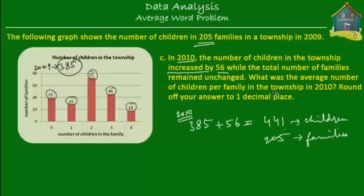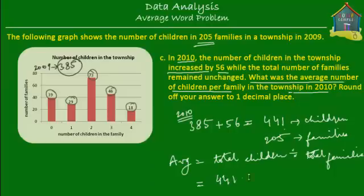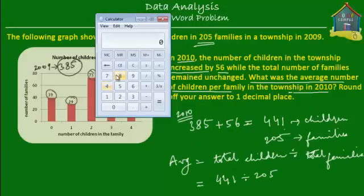What we have to find out now is: what was the average number of children per family in the township in 2010? The average equals total number of children divided by total number of families. So all we do is take these numbers and plug them into the formula. 441 divided by 205 equals 2.15.